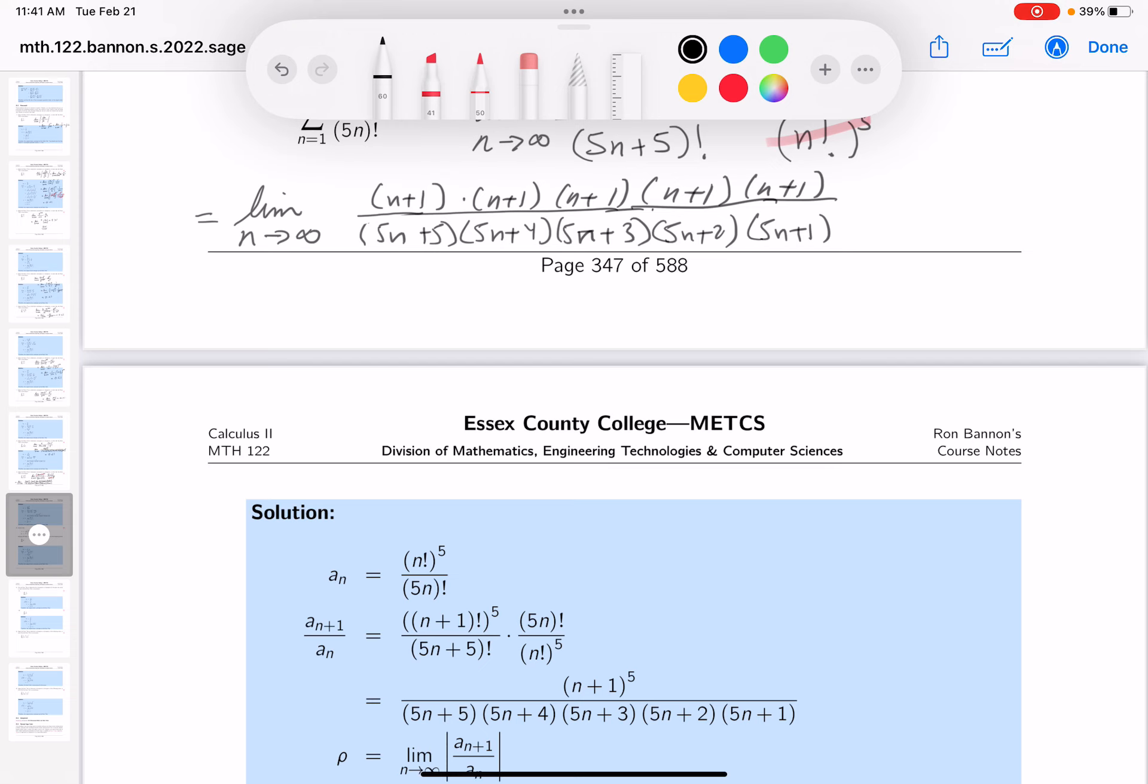But on top, you'd have 5th degree, and it's 5 factors of n. And on bottom, you got that too. So I'm going to point out that you get n^5, and some other terms there.